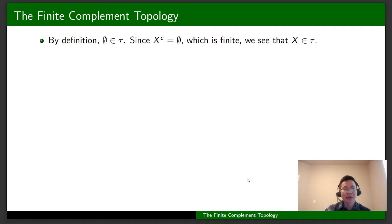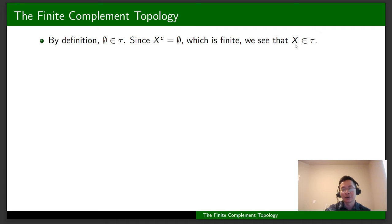I'm going to show that tau is a topology on X. First of all, the empty set belongs to tau by definition. Because the complement of X is the empty set, which is a finite set, we see that X belongs to tau.